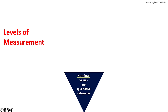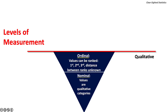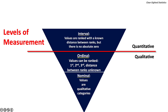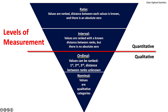Let's recap. With the nominal level, all values are qualitative and cannot be ordered in a meaningful way. The ordinal level is a qualitative measure that allows values to be ranked using ordinal numbers — first, second, third, etc. — but the distance between ranks is unknown. The interval level is quantitative; values can be ranked with a known distance between ranks, however the interval scale lacks an absolute zero. And finally, the ratio level: values are ranked, the distance between values is known, and there is an absolute zero that allows for the calculation of ratios.